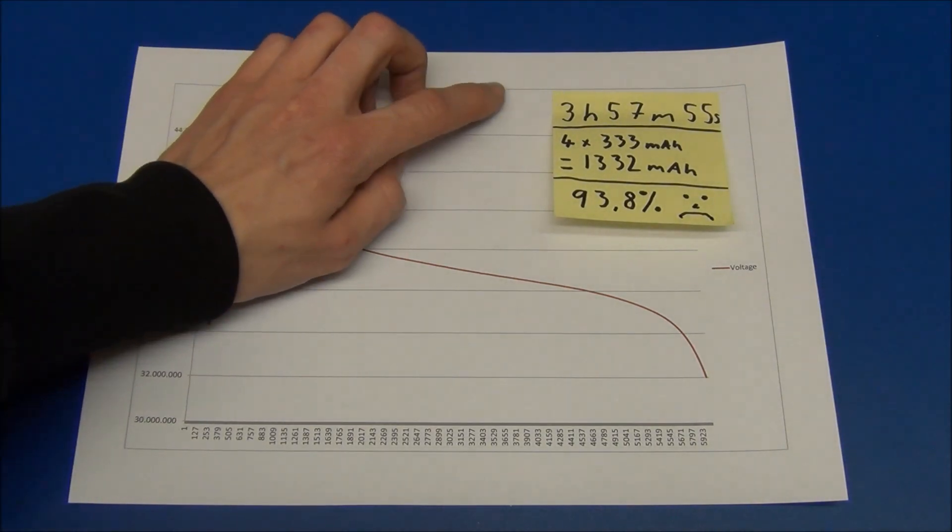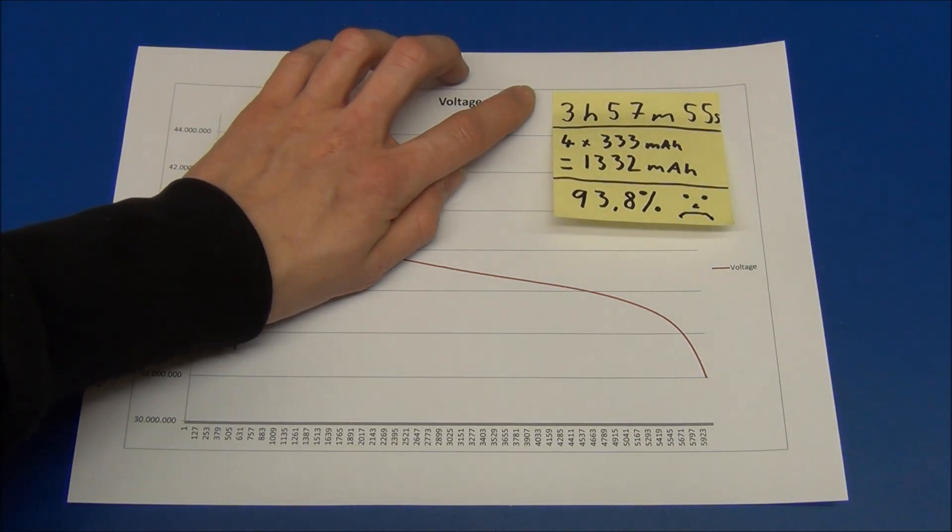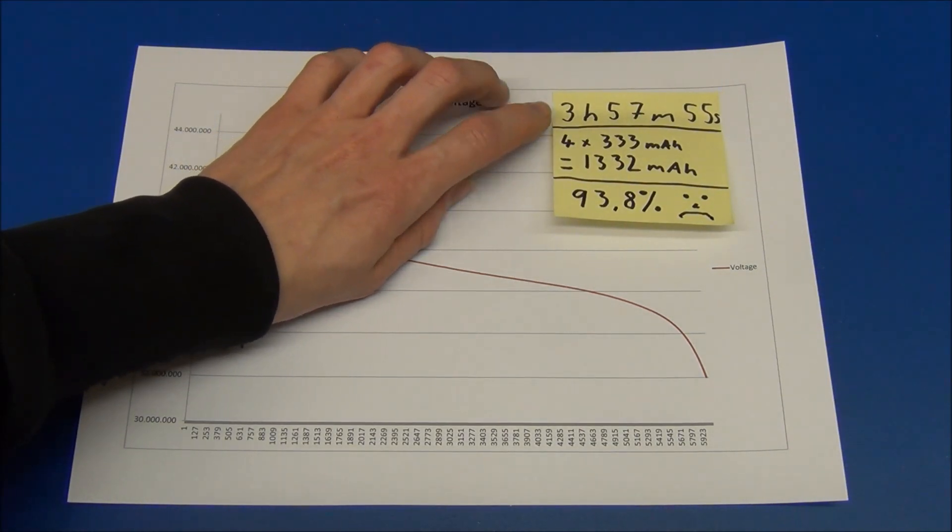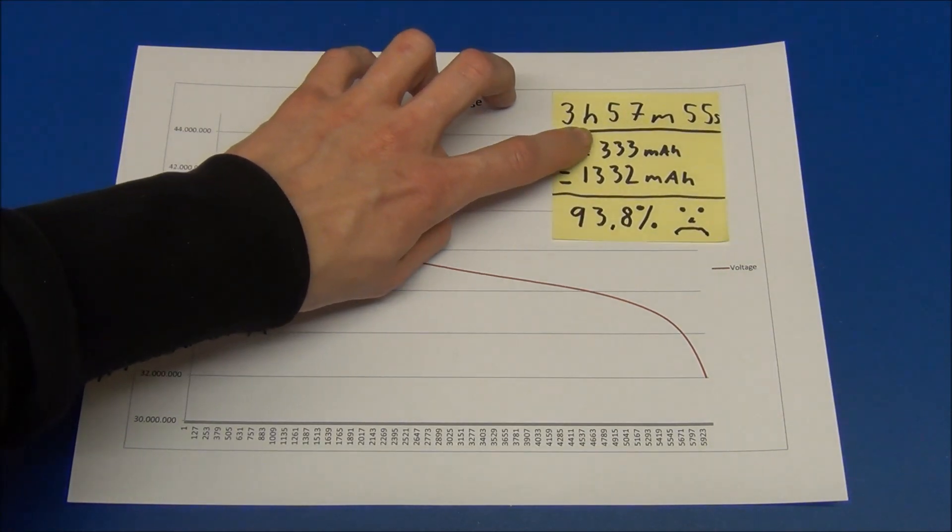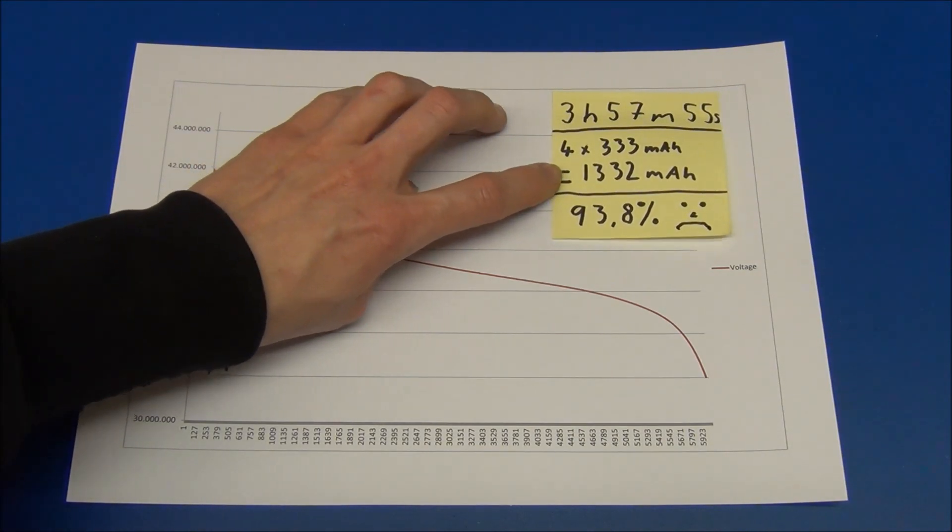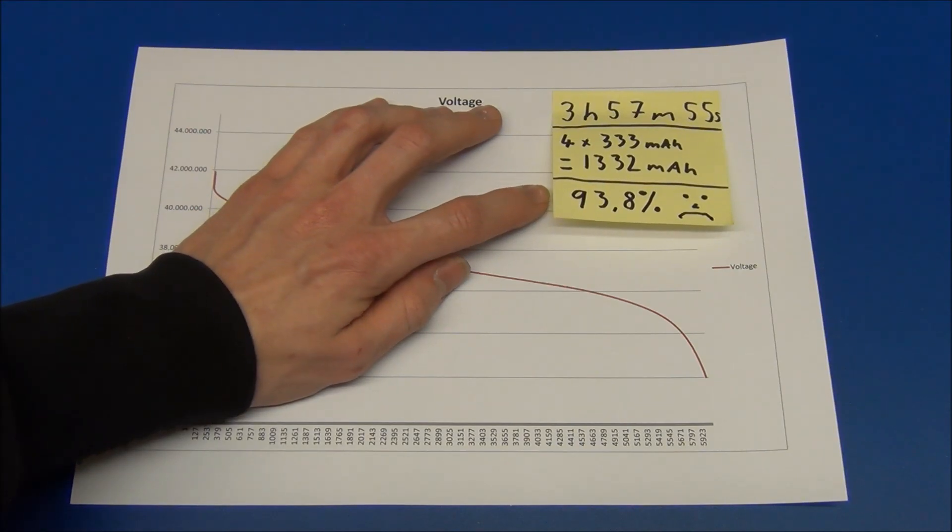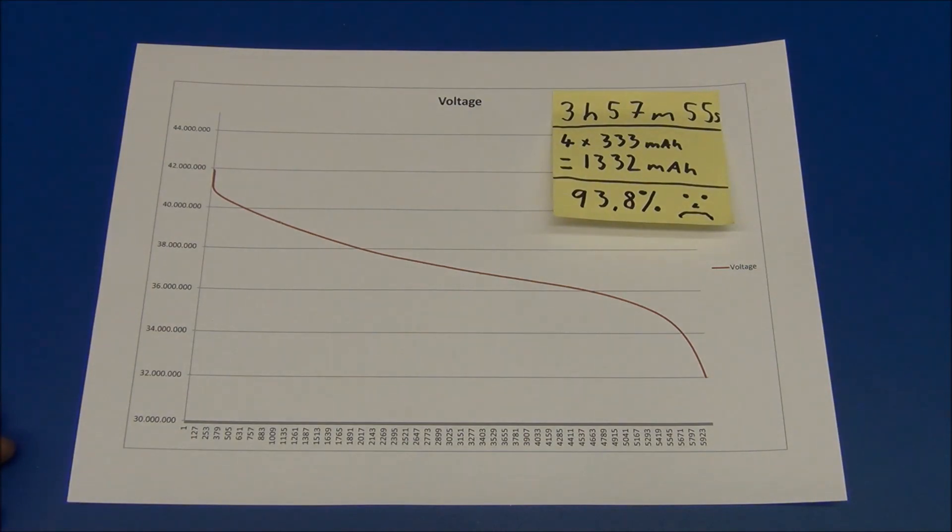So our battery was discharging for 3 hours 57 minutes and 55 seconds. So I rounded that up to over 4 hours. And 4 hours at 333 milliamps equals 1,332 milliamp hours. So that is still 93.8% of the rated capacity of the battery. So I guess there was really no reason to change the battery.